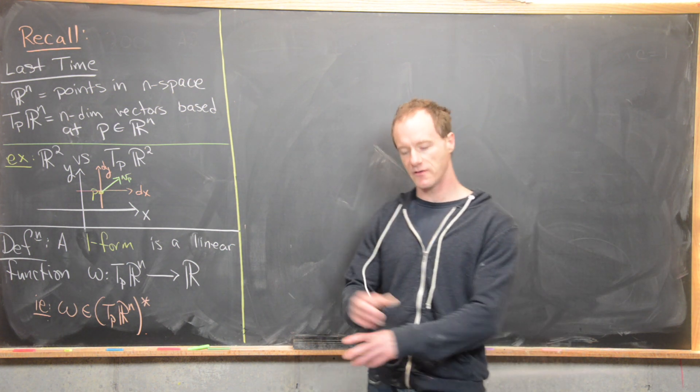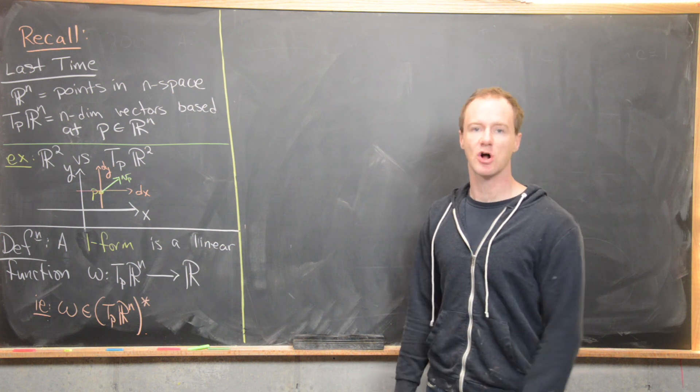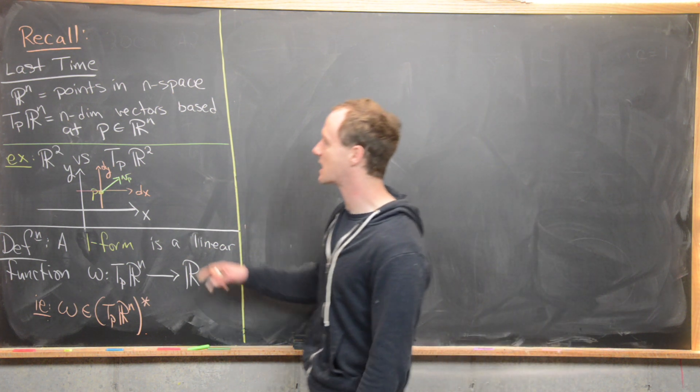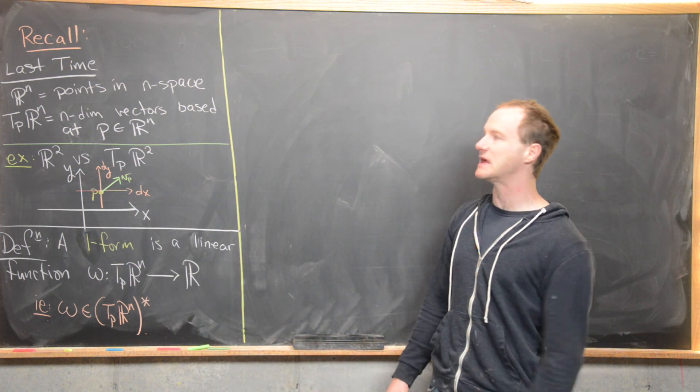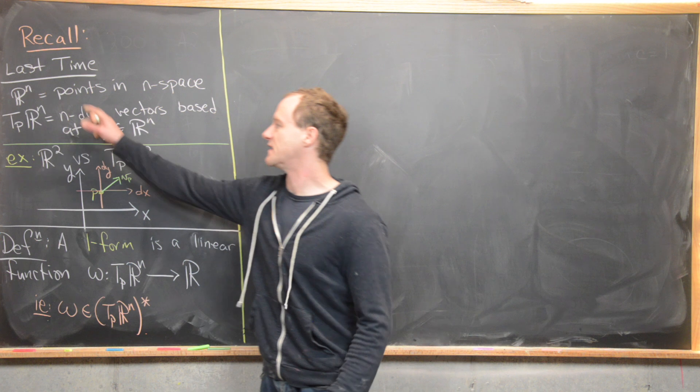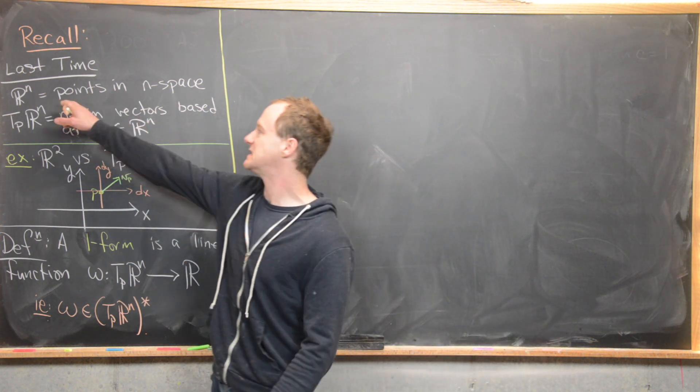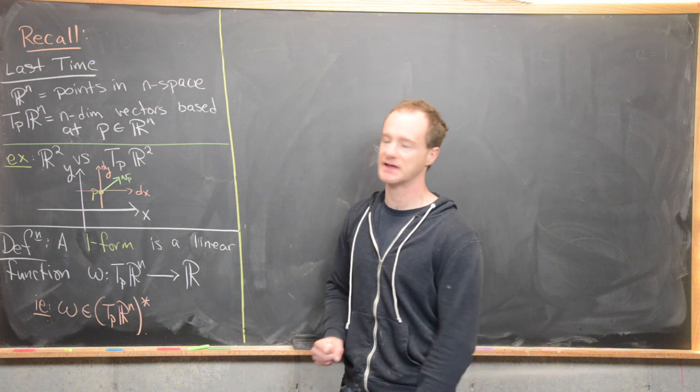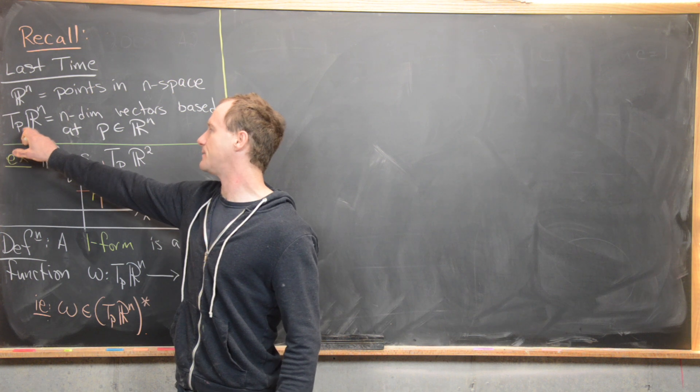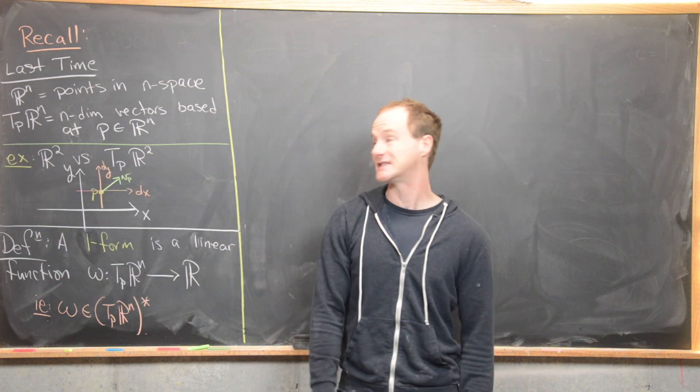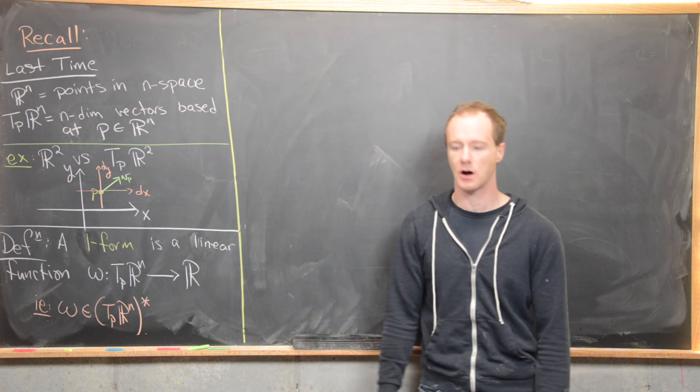Here we're continuing our path down a very elementary approach to differential forms. Just recall where we came from. Last time we determined the difference between R^n and T_p R^n, in other words the tangent space based at p of R^n. The idea was that R^n were these points in n-space, and then the elements from the tangent space at p of R^n were n-dimensional vectors based at a point p in R^n.